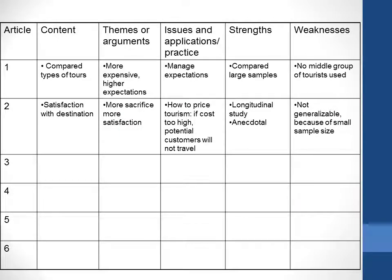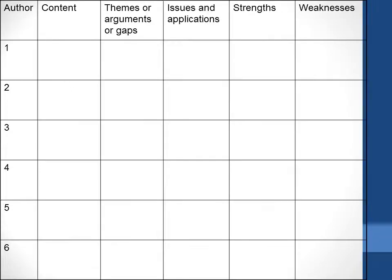You can see that the table has been filled in with a few ideas — this one is a tourism example, but you would put in whatever it is that you've been reading. You can print this blank sheet or make a modified version on your computer. You can also do this in Excel or simply on a Word document.